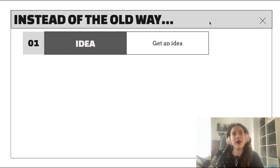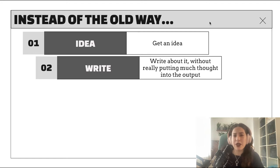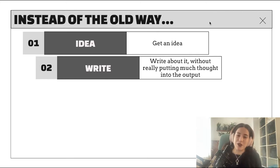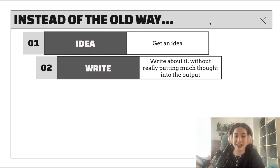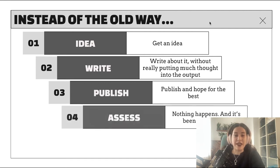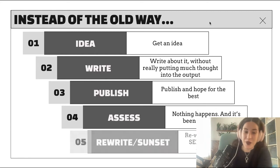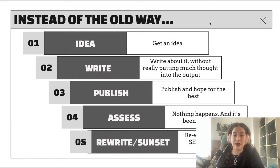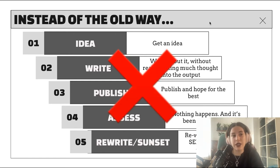Instead of the old way — where you get an idea, write about it without much thought into the output, think you can write about the topic the best, write from the heart, publish, hope for the best, and then nothing happens after two months — there are two options: you can either rewrite the content at some point, or a couple of years pass and an SEO consultant comes along and says we need to sunset this content because it's no longer relevant. This is a very old model that I personally don't think works anymore.